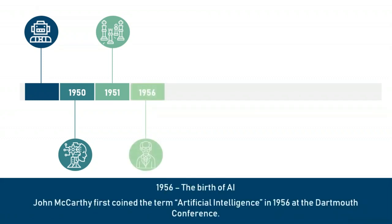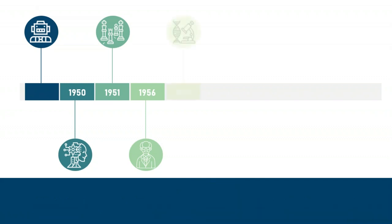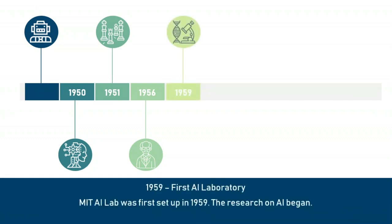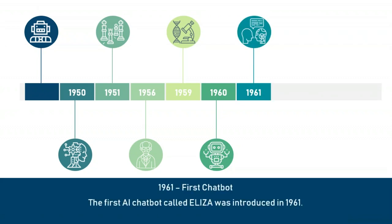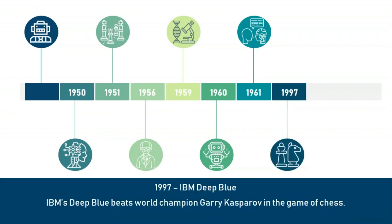In 1956, probably the most important year in the invention of AI, the term 'artificial intelligence' was coined by John McCarthy at the Dartmouth Conference. In 1959, the first AI laboratory was established — the MIT lab, which is still running to this date. In 1960, the first robot was introduced to the General Motors assembly line. In 1961, the first chatbot was invented — known as Eliza. Then in 1997, IBM's Deep Blue beat the world chess champion Gary Kasparov, which was the first major accomplishment of AI.